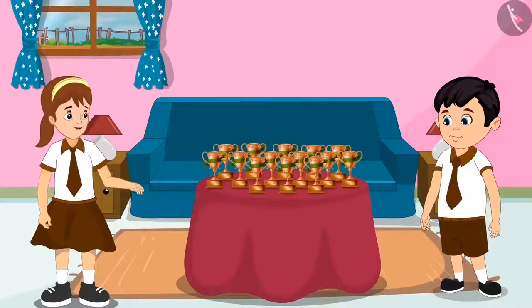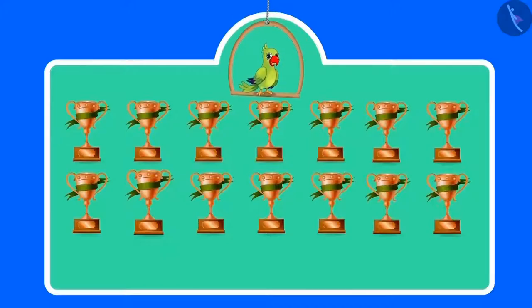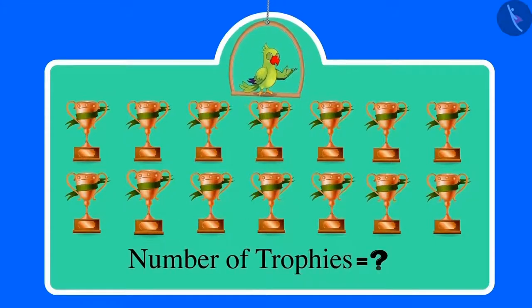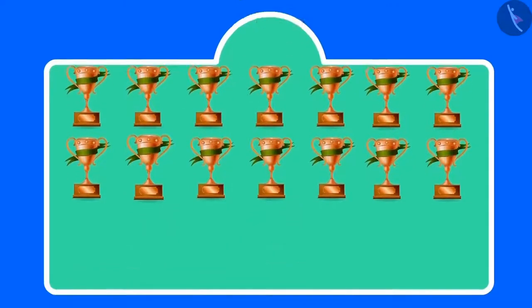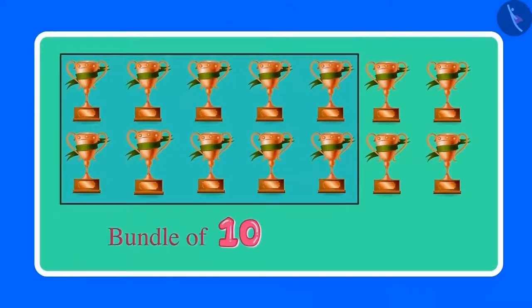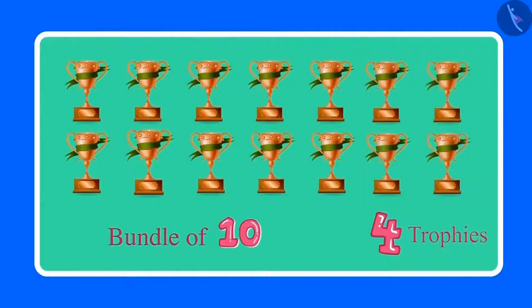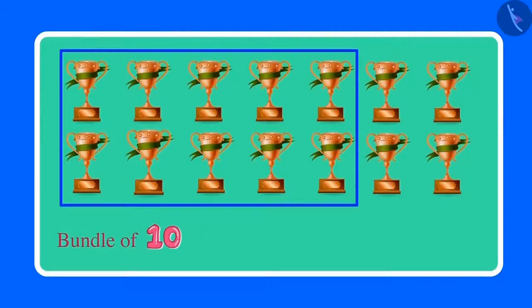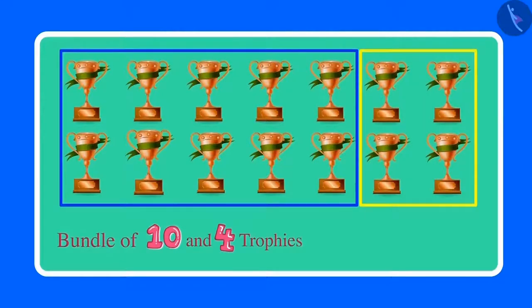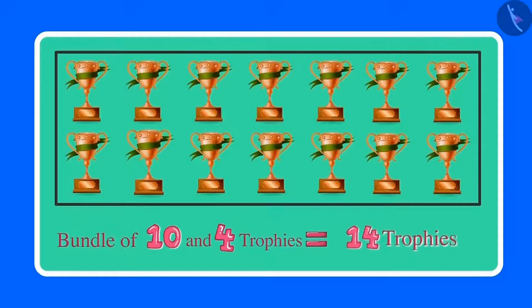Aarti agrees and off they go. Now children, can you tell me how many trophies does Chotu have? Come on, let us count together. These are 10 trophies, and we can make one bundle of 10 trophies. Apart from this, there are four more trophies. This means that Chotu has one bundle of 10 and four more trophies.